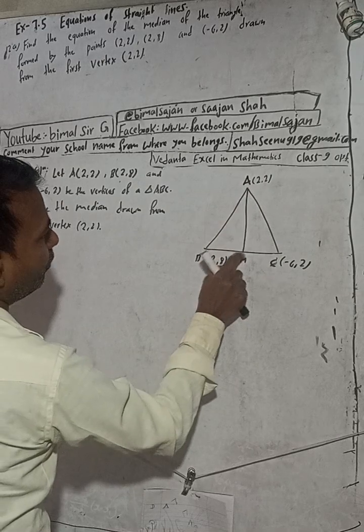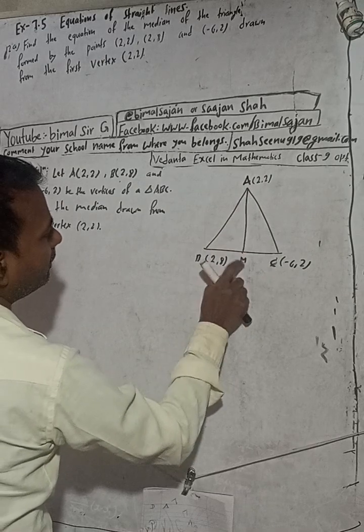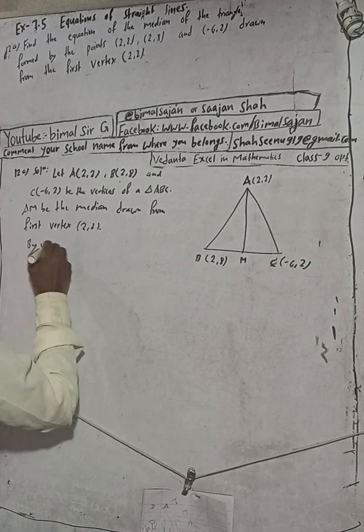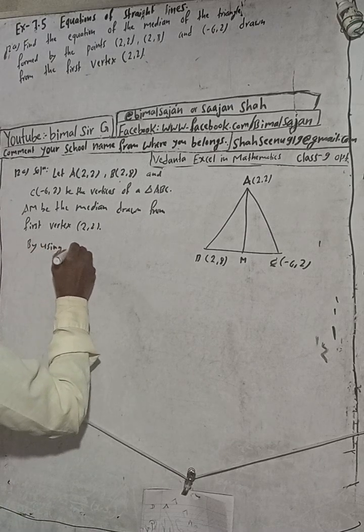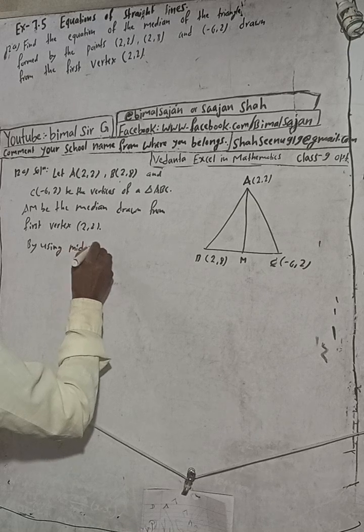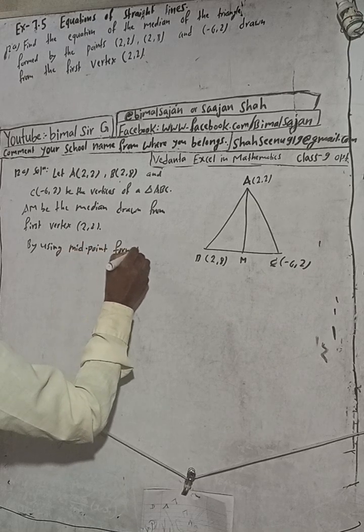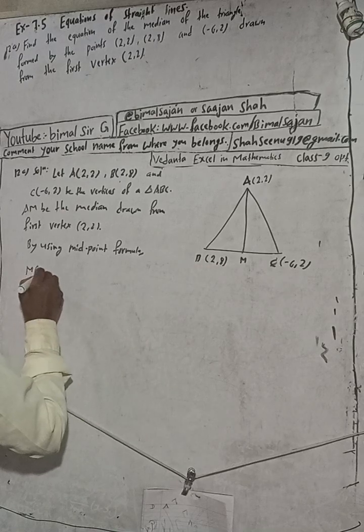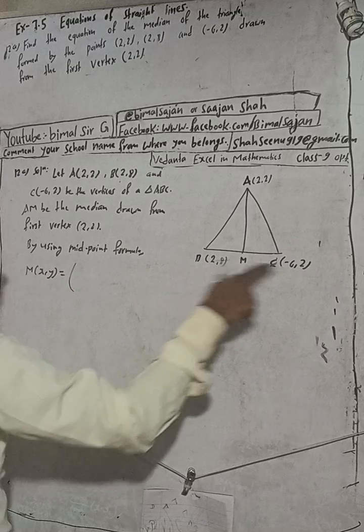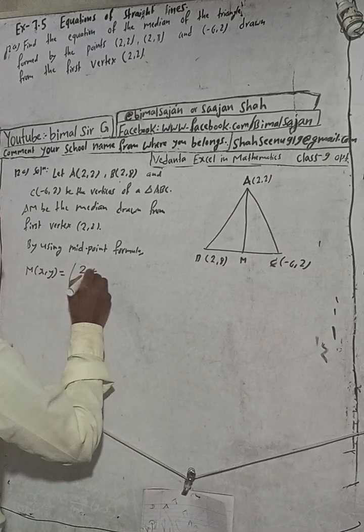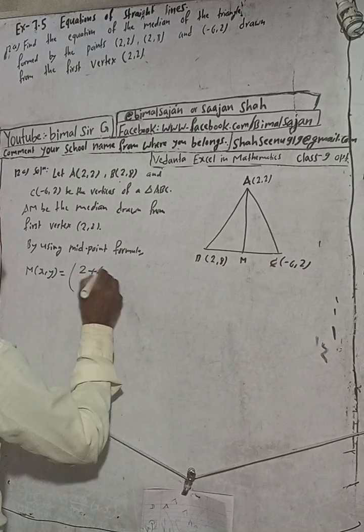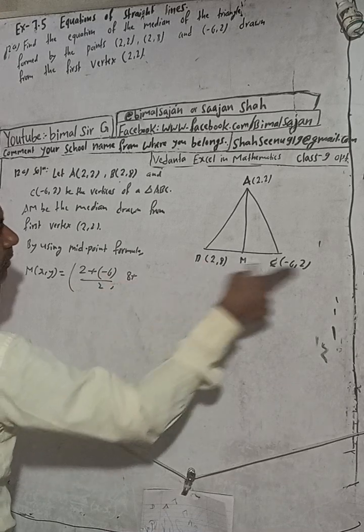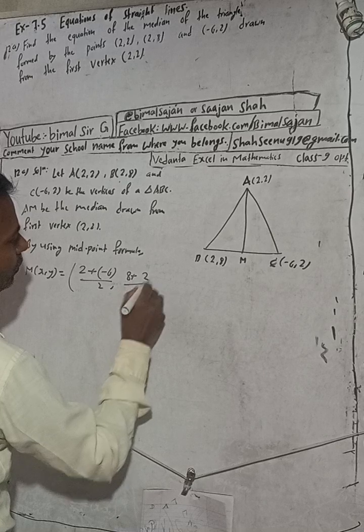By using midpoint formula. So, this midpoint formula x,y equals this plus this. That means, 2 plus -6 by 2, comma, 8 plus 2 by 2. Is equal to 2 plus -6 by 2, 8 plus 2, 10 by 2.